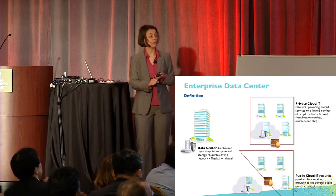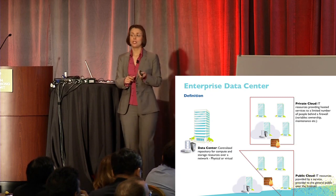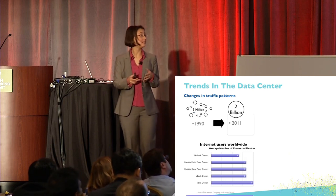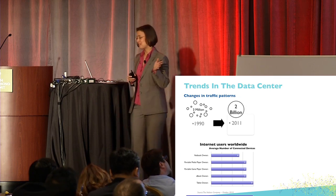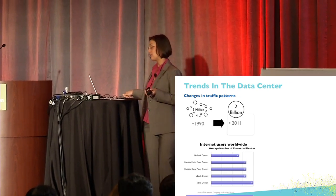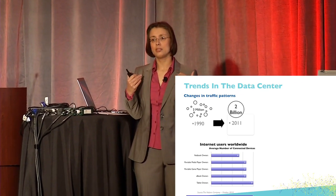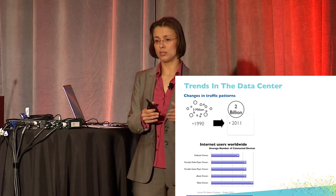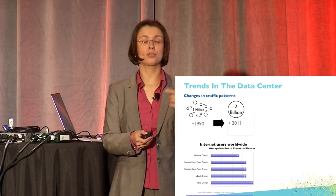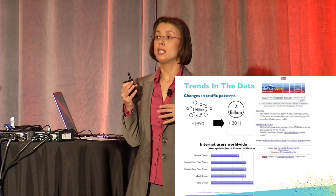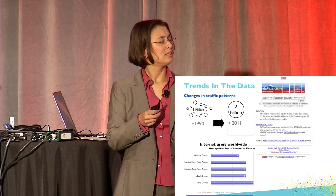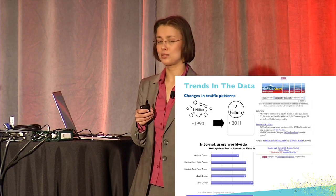What has changed in the data center space? Obviously a lot more devices — you probably have more than one device, between four to six per user. If you look at the number of people connected, this has generated a tremendous amount of traffic in what we call north-south traffic — users accessing information through multiple devices. But what has really challenged data centers is what we call east-west traffic. Let's have a look at an Alta Vista screenshot from about 15 to 20 years ago — that's how simple it looked.